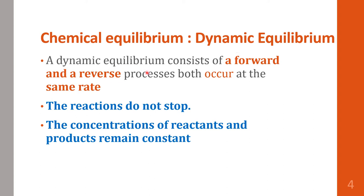Chemical equilibrium is a dynamic equilibrium. Dynamic equilibrium means that the equilibrium does not stop — it consists of a forward and a reverse process, both occurring at the same rate. The reactions do not stop; the concentration of reactants and products remain constant. The forward reaction produces products and the reverse reaction produces reactants.